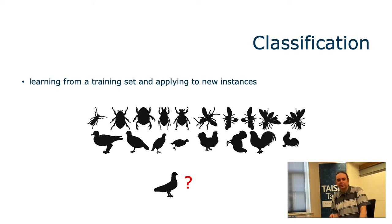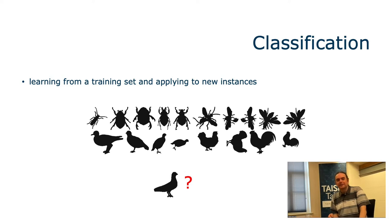The next term in the title is classification — a fairly simple concept perhaps known to most of the audience. Essentially, classification is the process of learning from a training set and applying that knowledge to classify new instances of data. An example from image classification: given images of beetles, flies, birds, and chickens, we learn from a small training set and assign class labels to new instances.